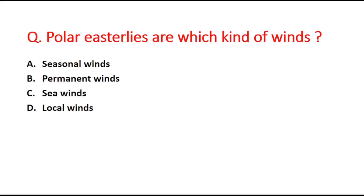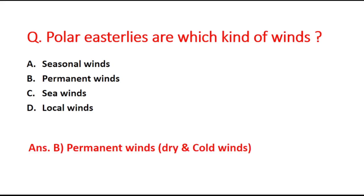Next question: Polar easterlies are which kind of winds? Option A is seasonal winds, B is permanent winds, C is sea winds, and D is local winds. The right answer is option B, permanent winds. Polar easterlies are dry and cold winds.